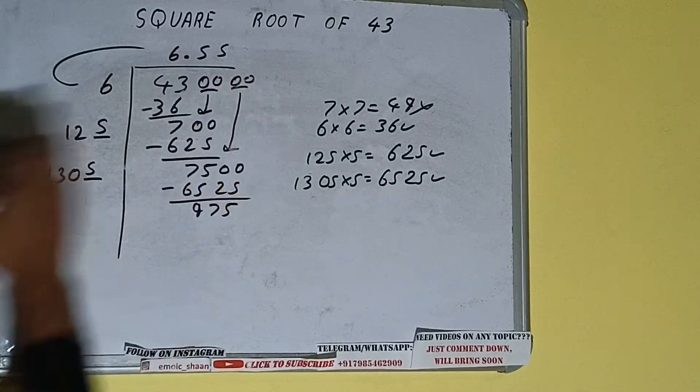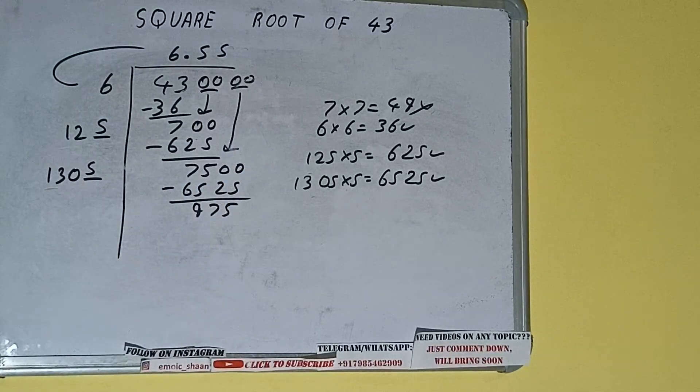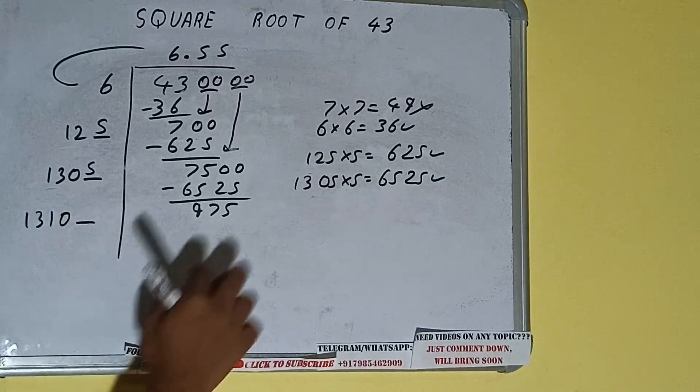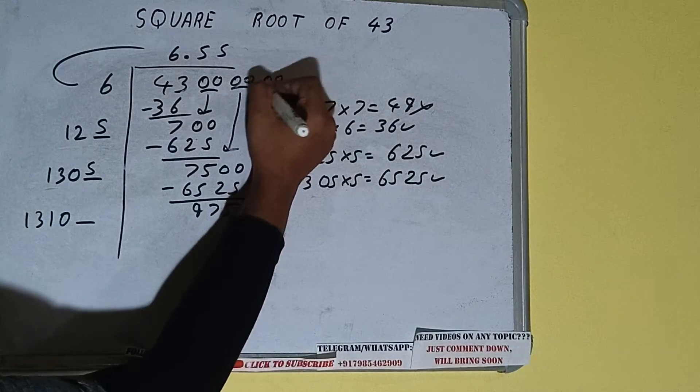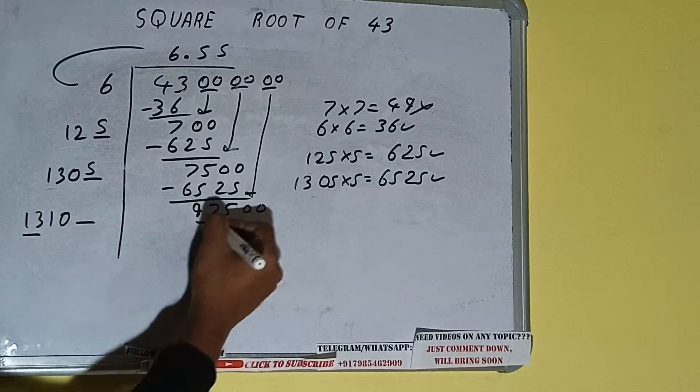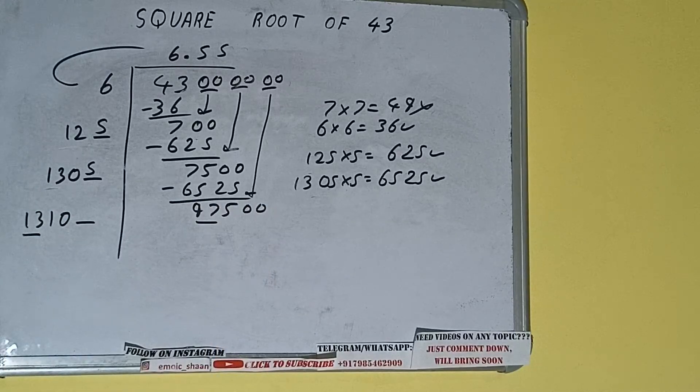Now 1305 into 5, so add both. 1305 plus 5 will be 1310 and 1 digit extra. This number we need to make big, so bring the next pair of zeros down and it will be 97500.